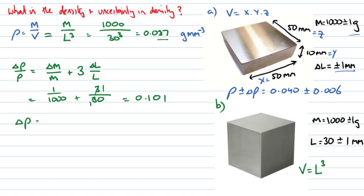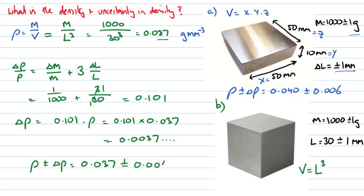So, uncertainty delta rho is just going to be equal to 0.101 multiplied by rho, 0.101 multiplied by 0.037. This just looks like dividing that number by 10, so 0.0037, and some higher numbers which we'll truncate anyway. So, my density plus or minus my uncertainty in my density, I can report as 0.037 grams per millimeter cubed, plus or minus, once again remembering I want to only have one significant figure in my uncertainty, and to make sure that it has the same decimal location as the last digit in my measurement. So, this will be 0.004.